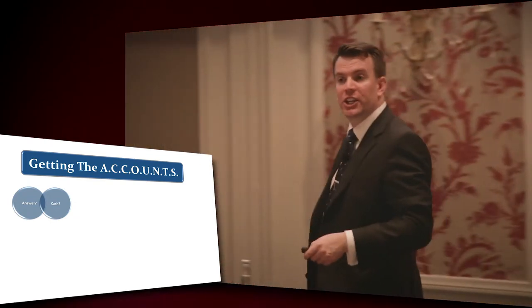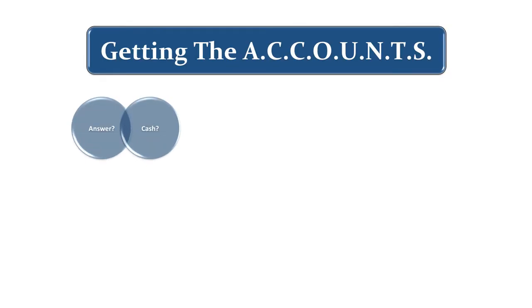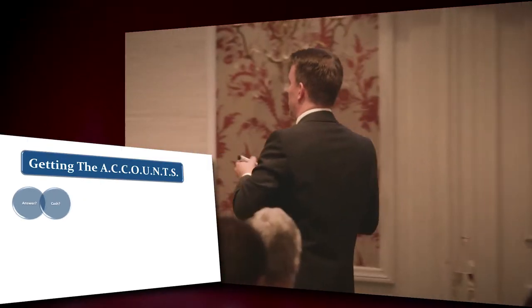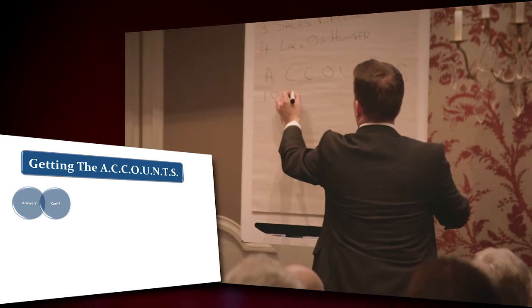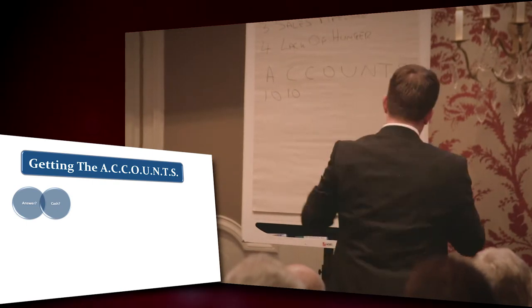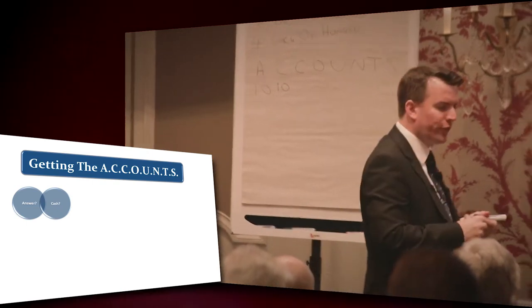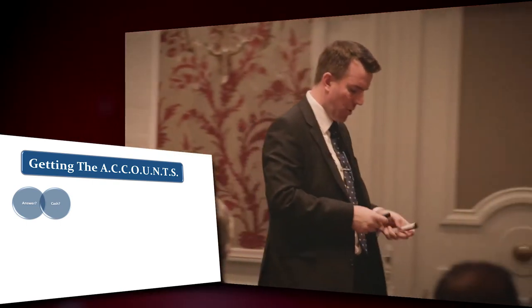The first C is Cash, meaning at the value that we put in there, can they afford us at that number? If they can afford us, put a 10. If they cannot afford us, put a zero.